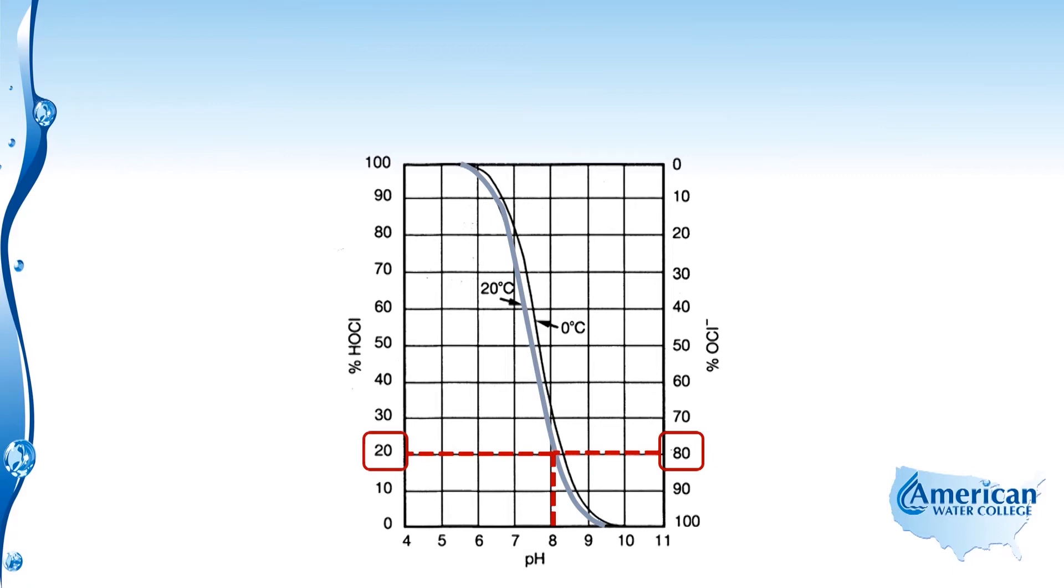As we lower the pH to 7, we can see a dramatic impact on the distribution of chlorine species. At a pH of 7, seventy percent of our chlorine is in the form of hypochlorous acid and only thirty percent is in the form of hypochlorite.